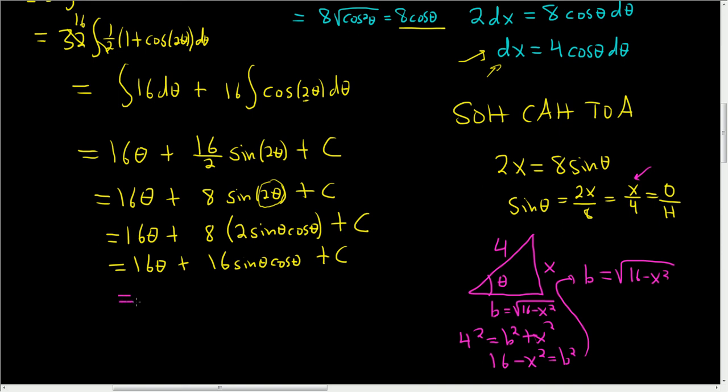We need to deal with the theta. We know that the sine takes theta and gives us x over 4. That means that the arcsine takes x over 4 and gives us back theta, because the arcsine is the inverse of sine. It undoes what sine does to theta. So here we get 16 arcsine of x over 4 plus 16. Sine is x over 4.